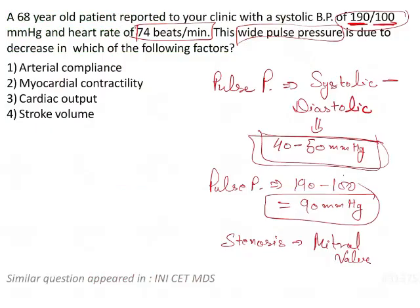Going back to the question, the answer is arterial compliance — a decrease in arterial compliance leads to widening of the pulse pressure. There will be an increase in systolic blood pressure and a decrease in diastolic blood pressure. So the answer is option one.